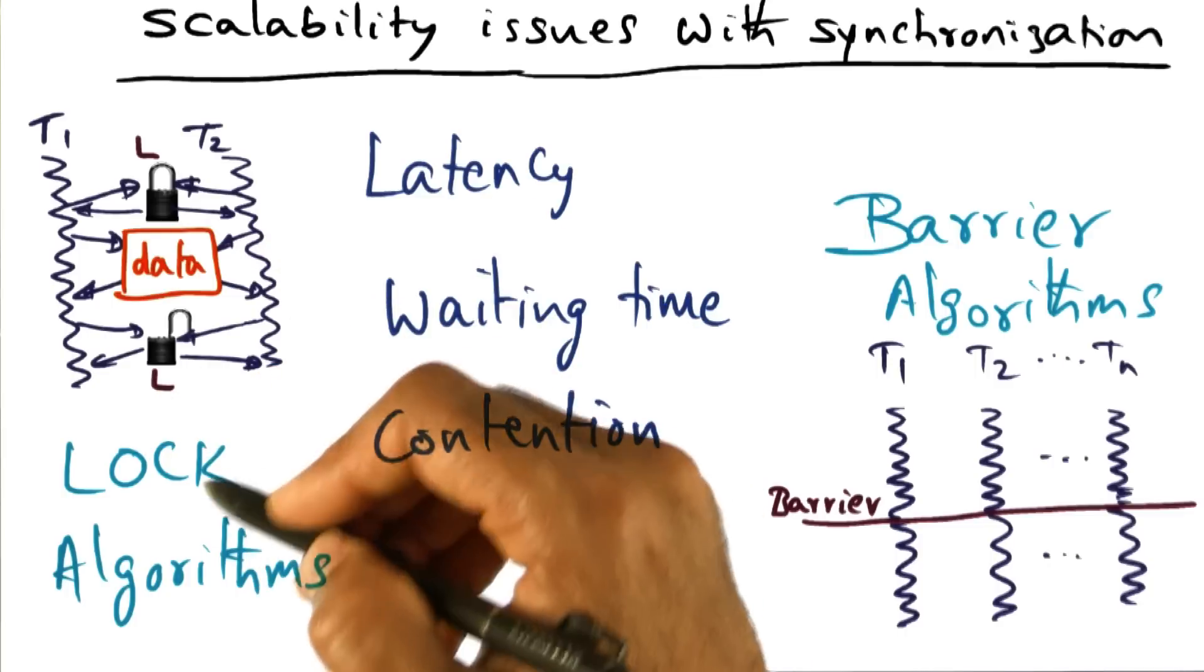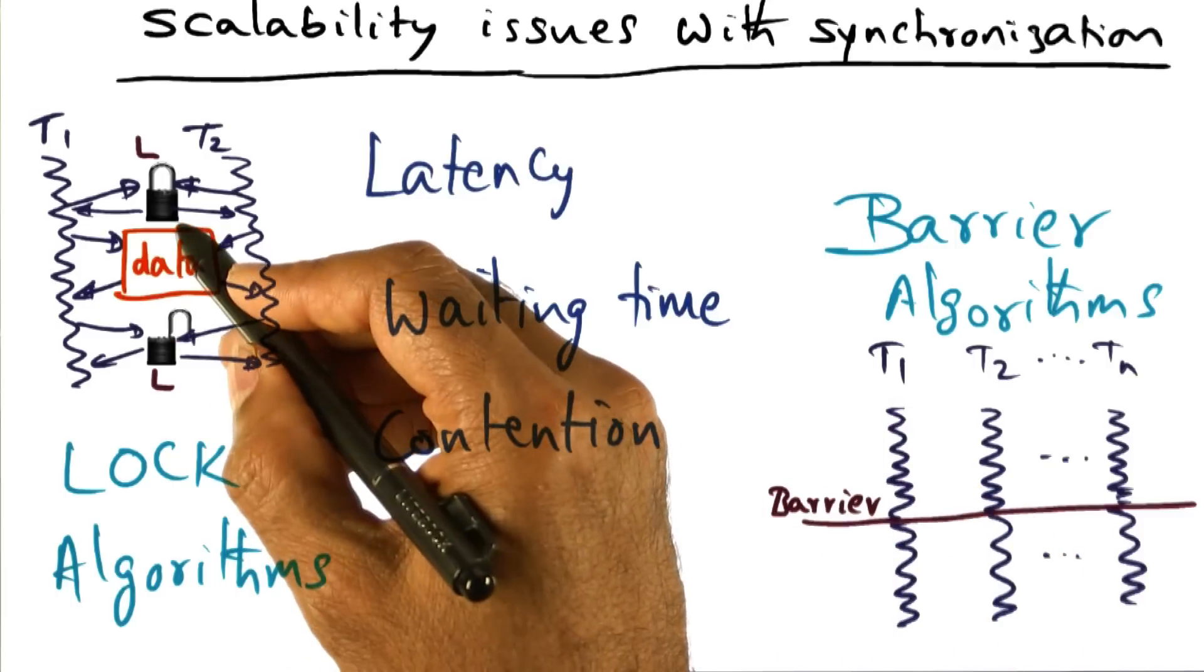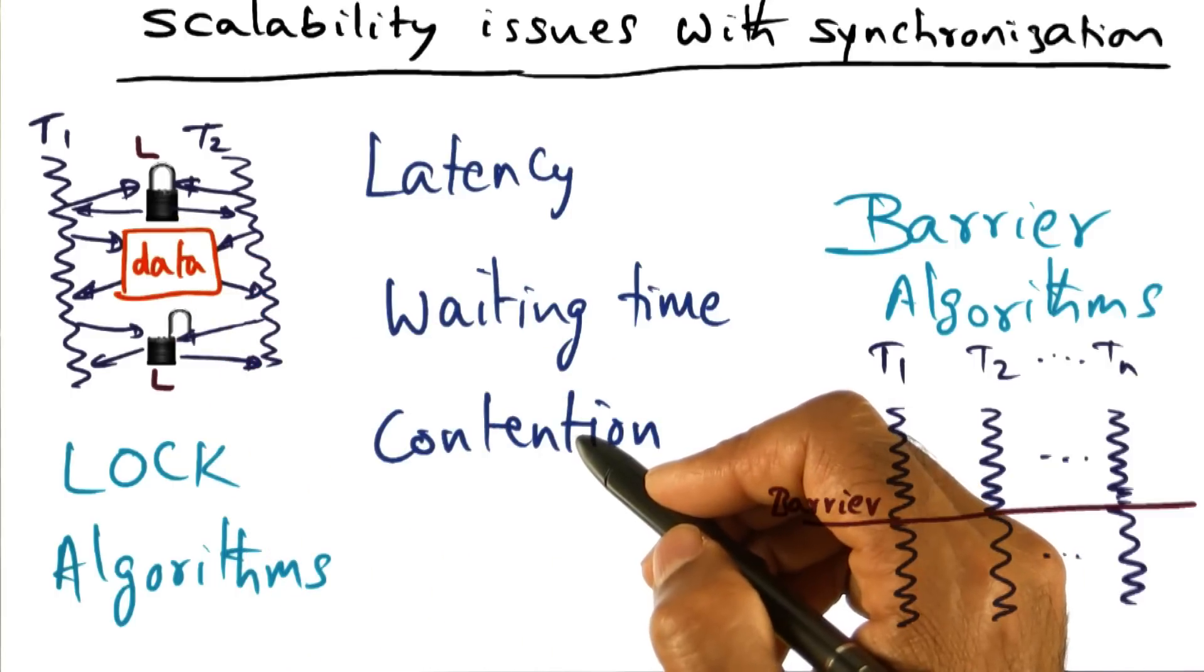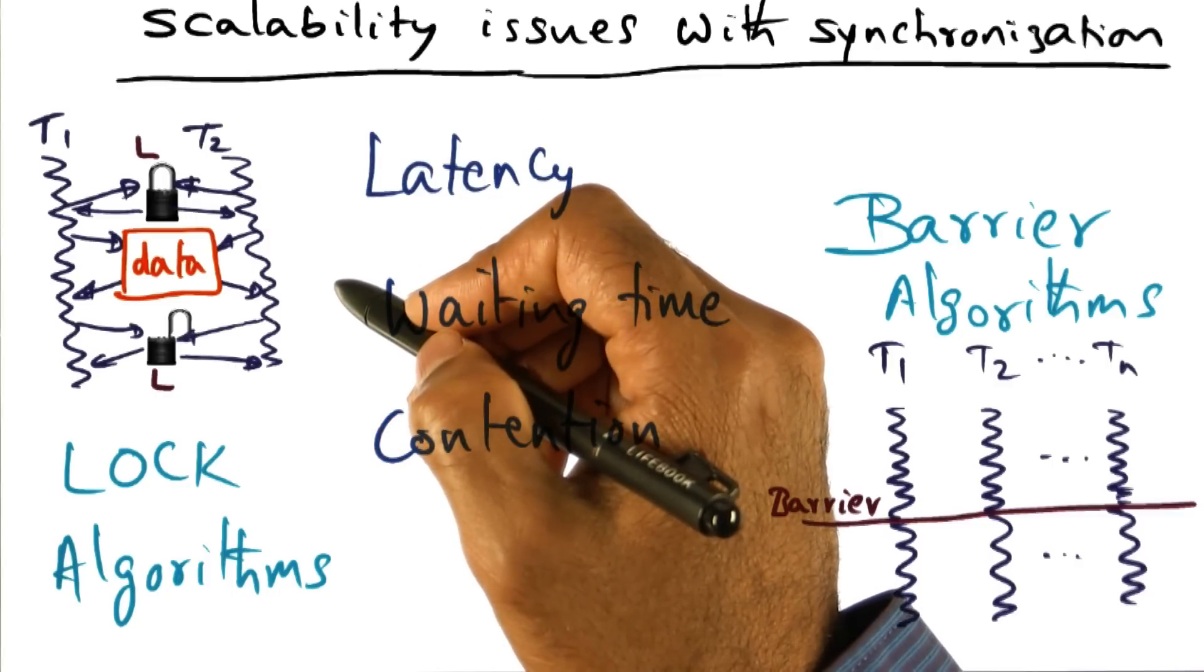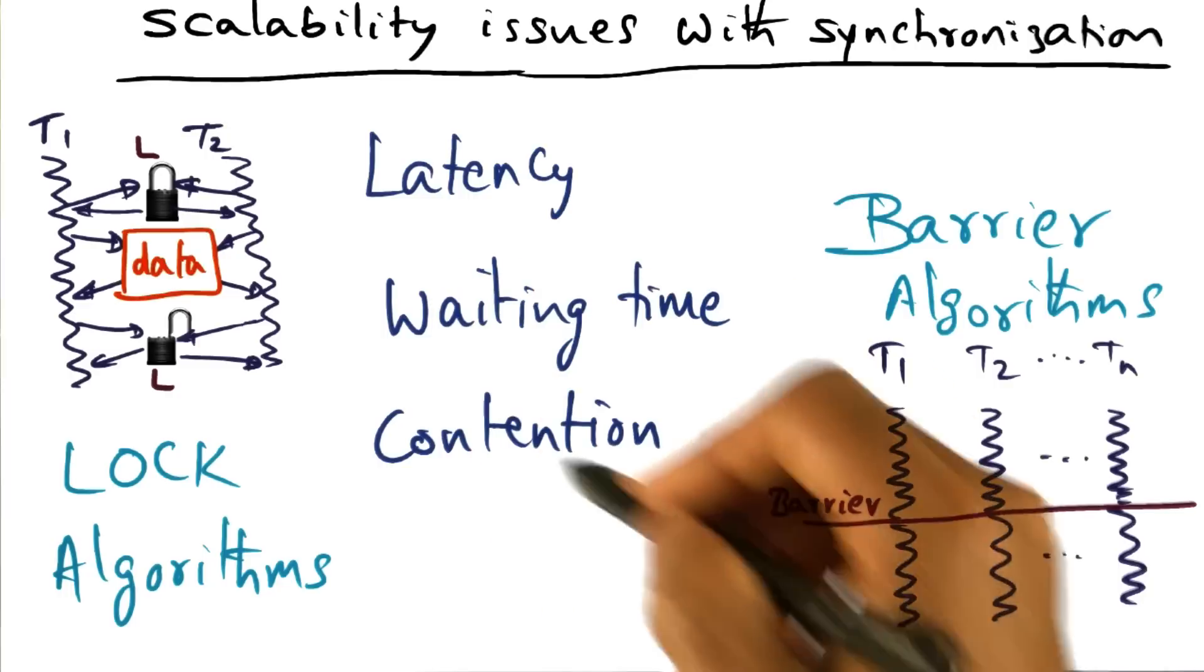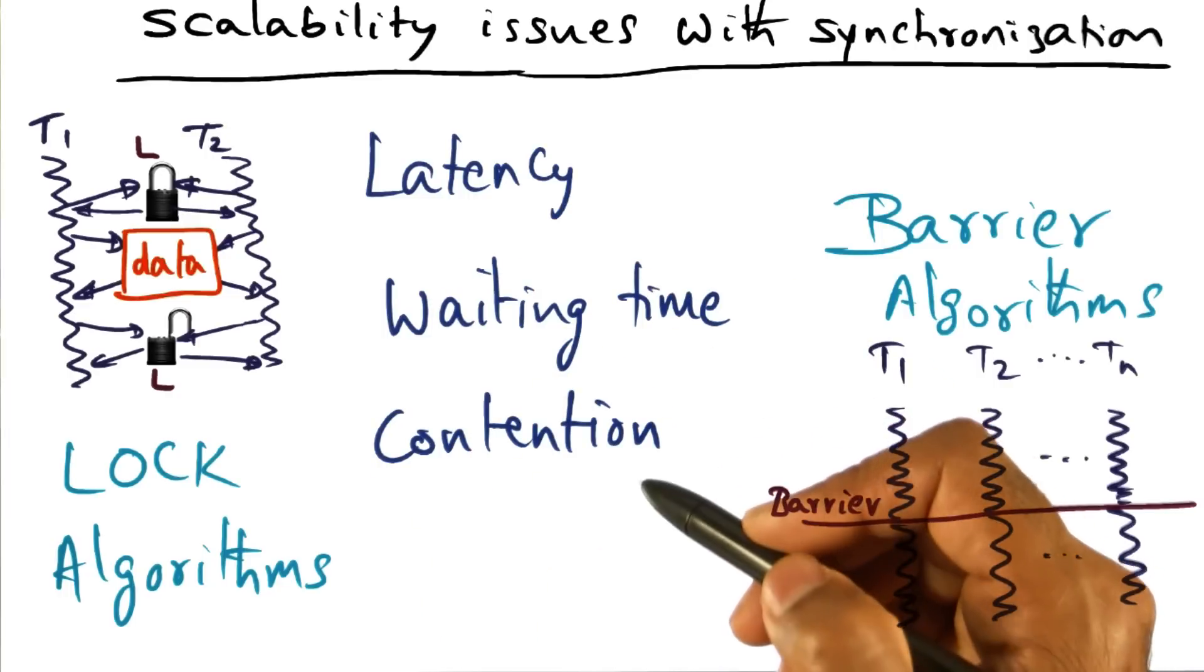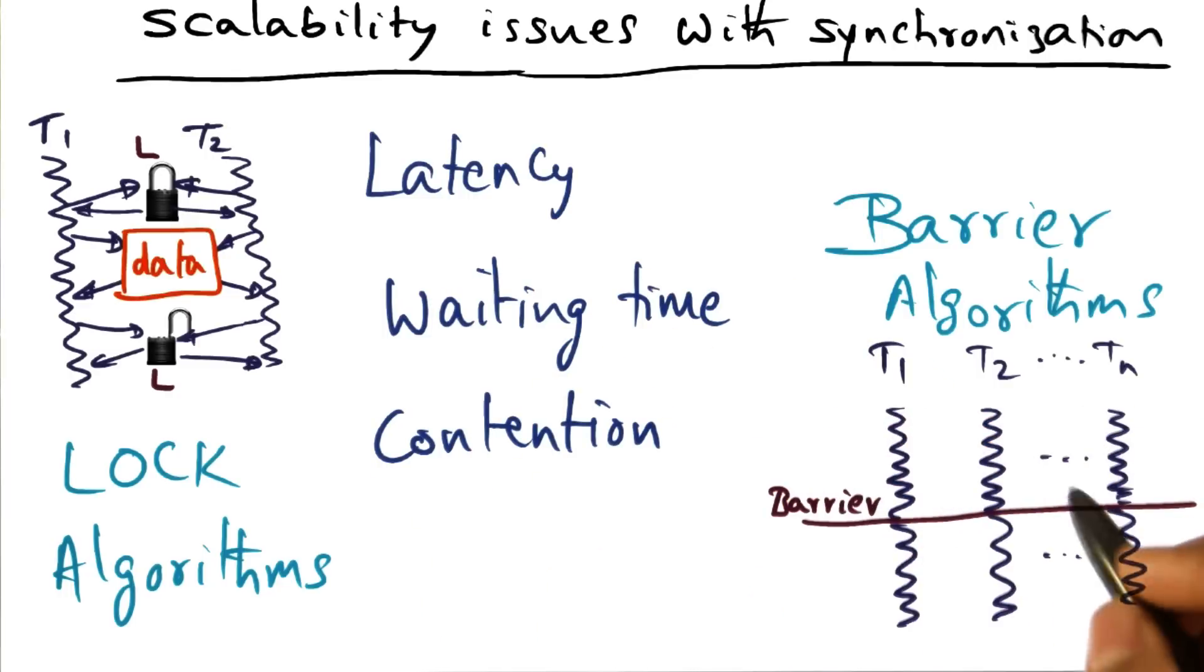If they're all waiting to access this lock, they're all contending for this lock. How long does it take in the presence of contention for one of them to become the winner of the lock and the others to go away? That's the contention part of implementing a synchronization primitive.